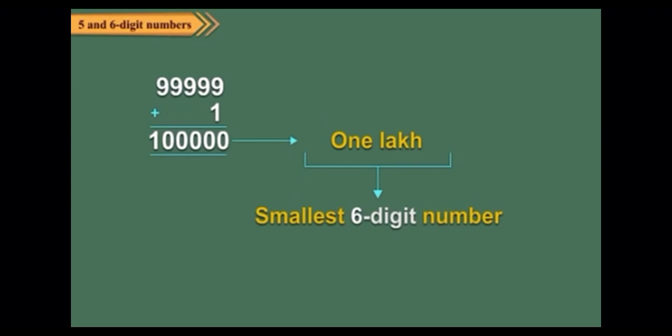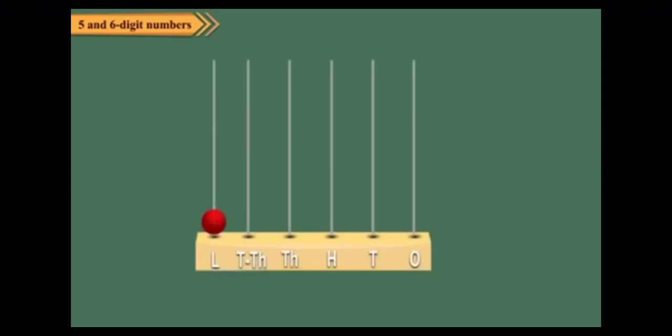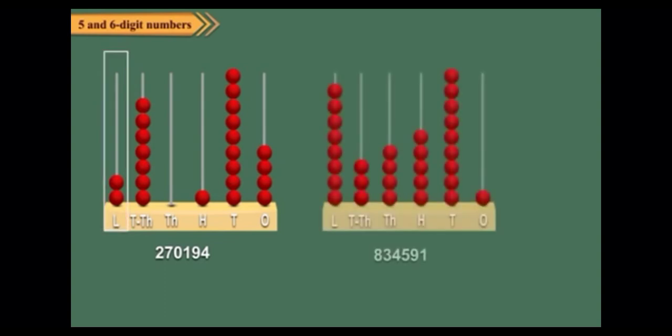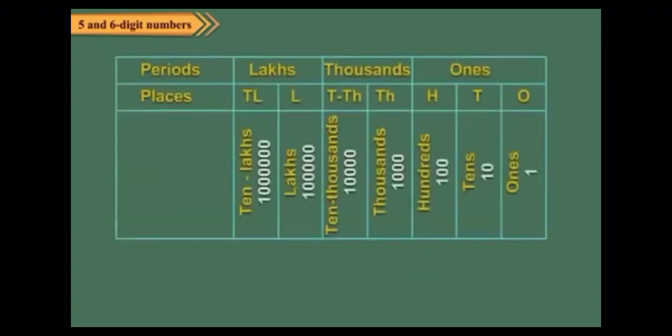Six-digit numbers can also be represented on the abacus. Here the leftmost spike represents the lakh place. Two lakh seventy thousand one hundred ninety-four and eight lakh thirty-four thousand five hundred ninety-one have been shown on the abacus. To read and write large numbers, we use a place value chart called the Indian place value chart.